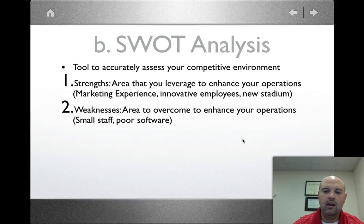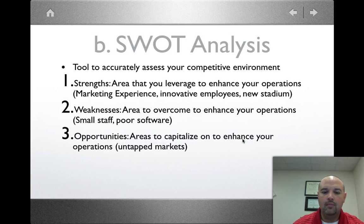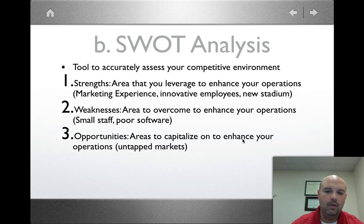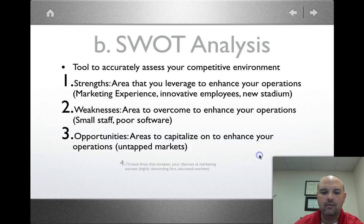Weaknesses are areas you have to overcome — maybe you don't have good software, good computer systems, or enough people to work. A weakness in sports studies, for example, is not having enough faculty members. Opportunities are things you want to enhance or capitalize on — for instance, UFC and NASCAR both see women as an opportunity, as an untapped market of people who could potentially watch their events.